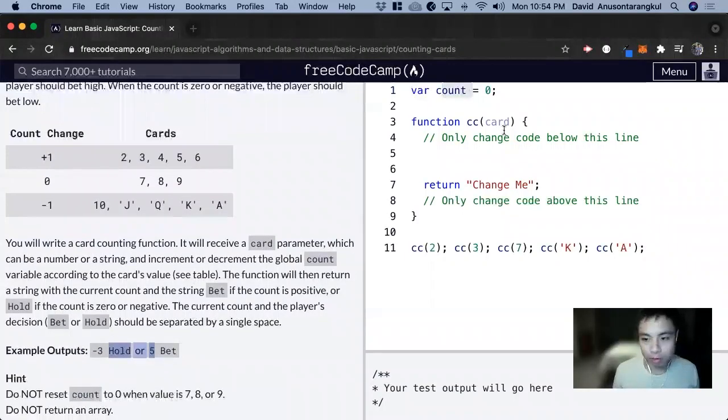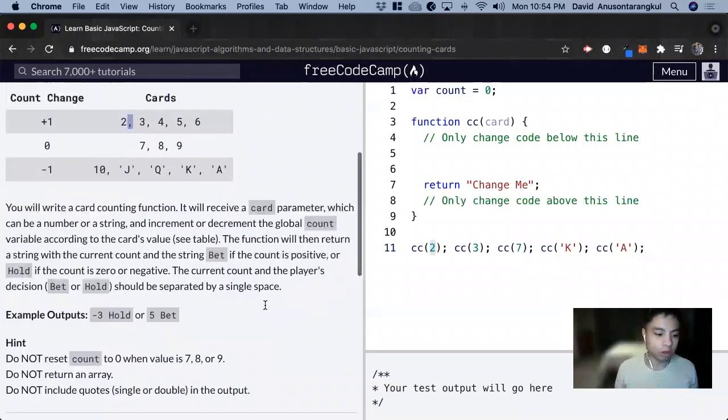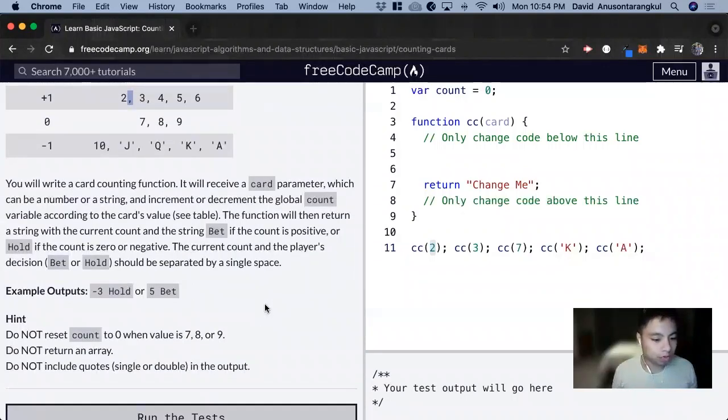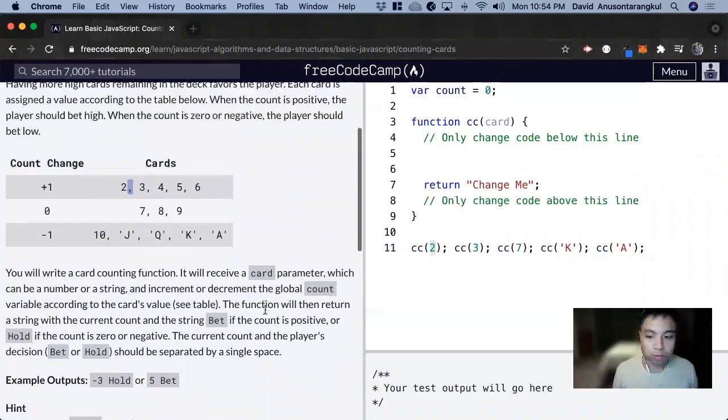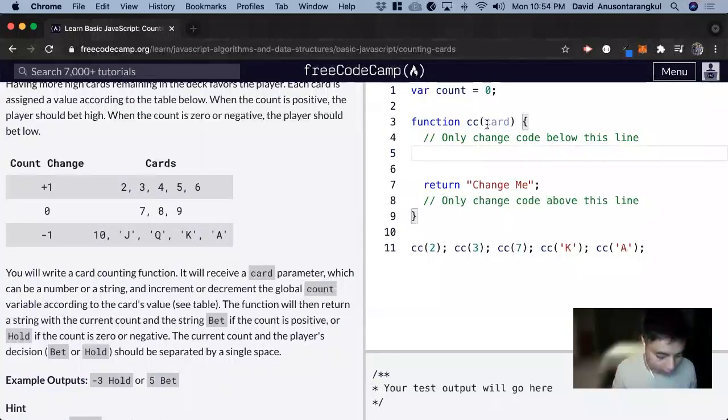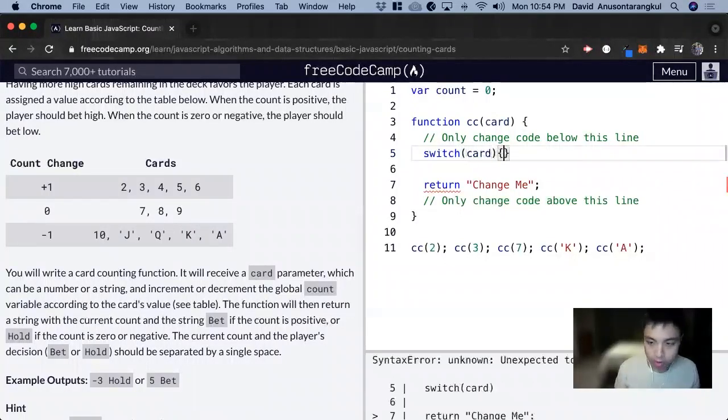So, and then these cards are what's going to be inputted and we can look at the test example here that they're putting in 2, they're putting in 3 and so forth. So what they want us to do is that we have to look at the card. So we're going to have to do a switch statement. So switch looking at the card and then curly brackets.